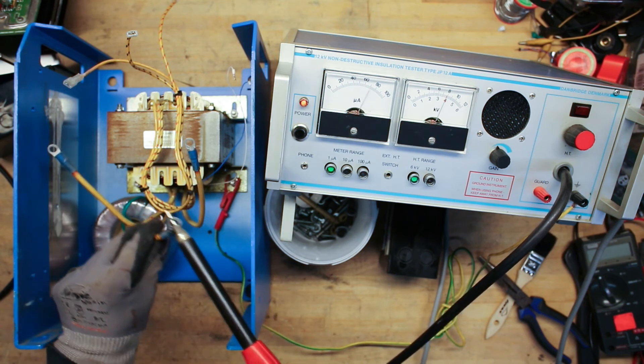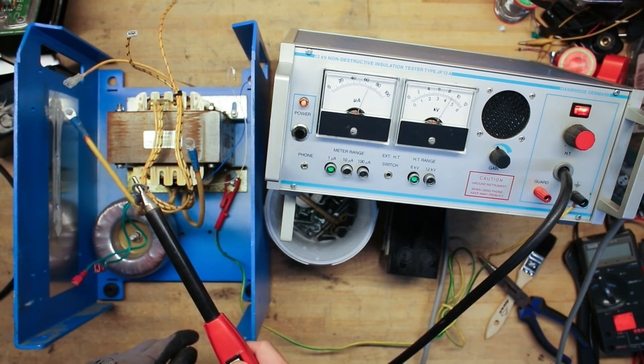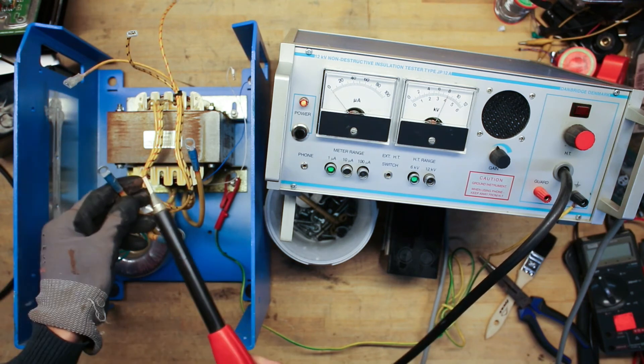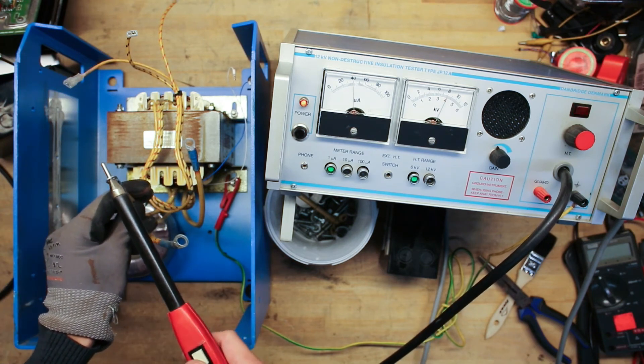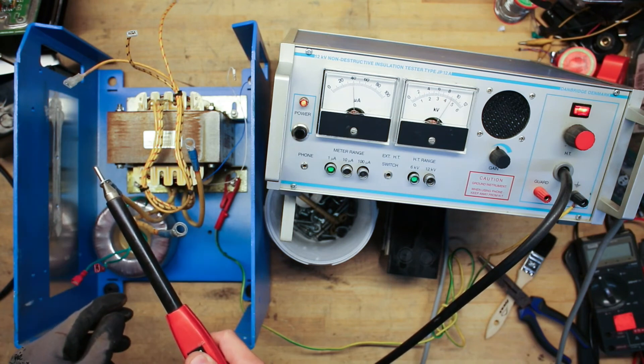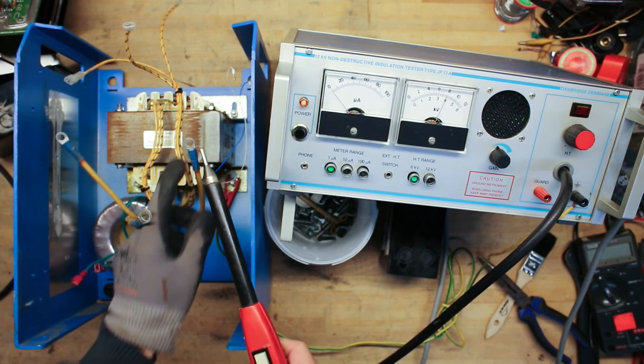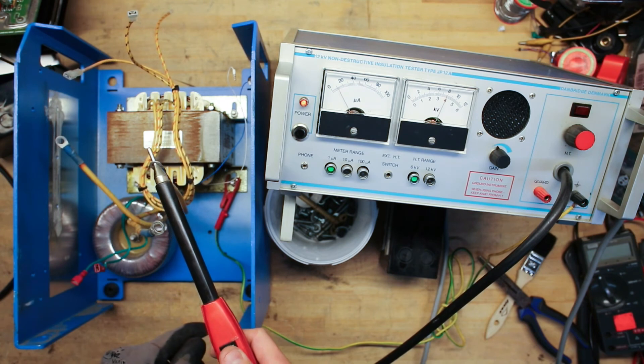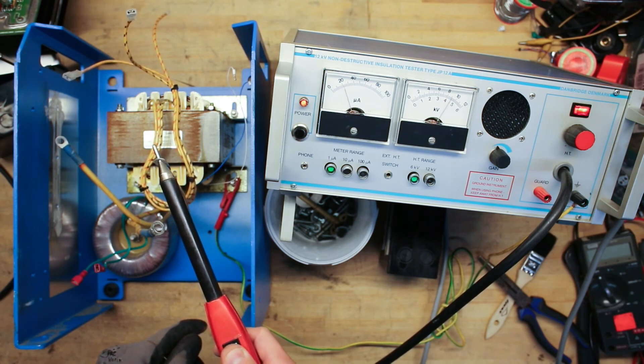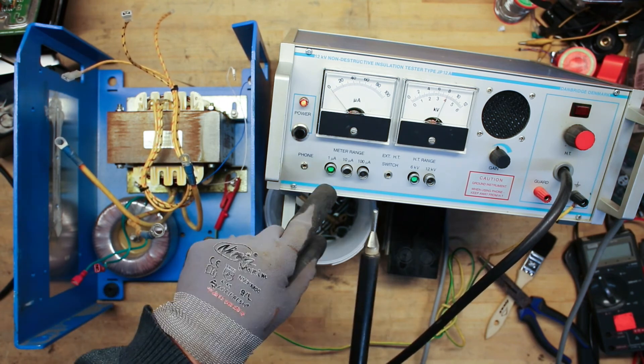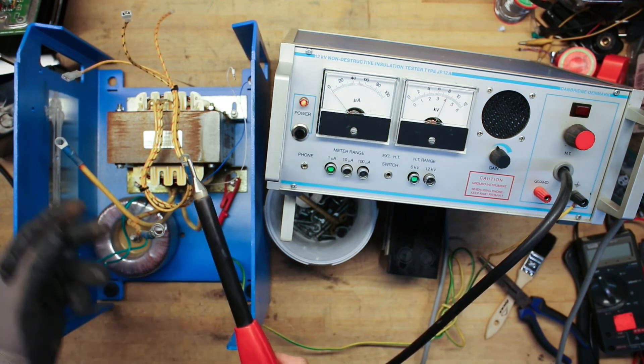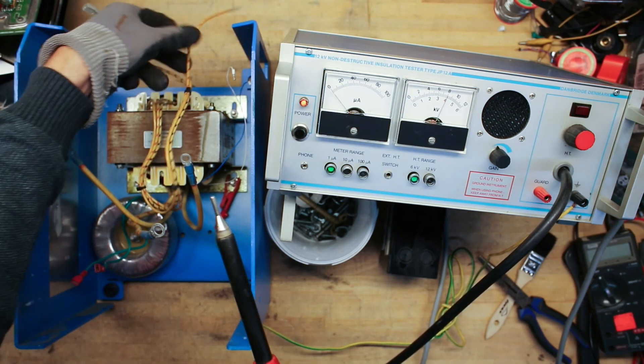So we are looking for some kind of leakage to ground. Let's start off with the secondary side. As we activate the high potential. Which is set for 6kV. Then we should see no extremely high currents being drawn. As we can see it's set for the lowest range. One micro amp.